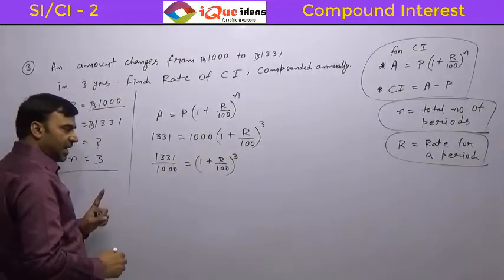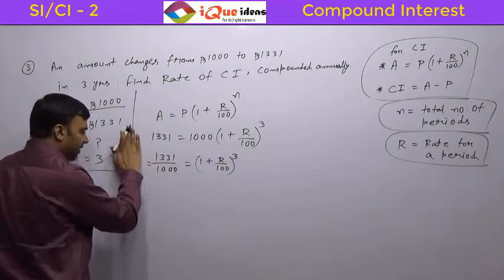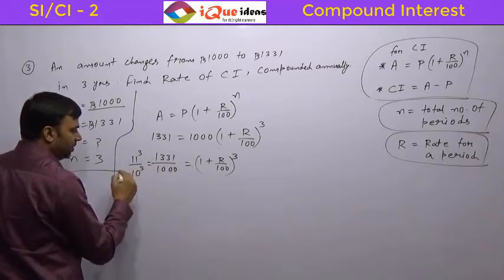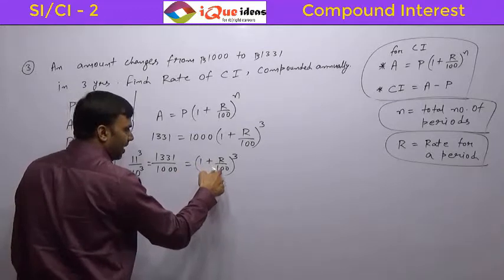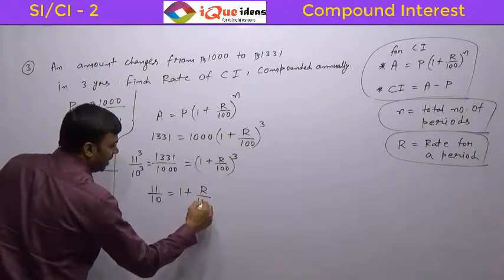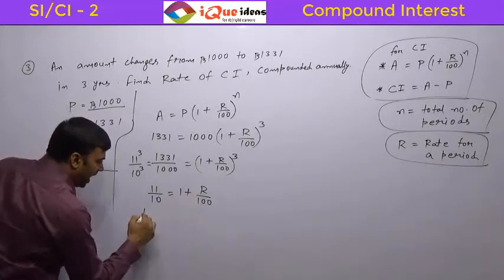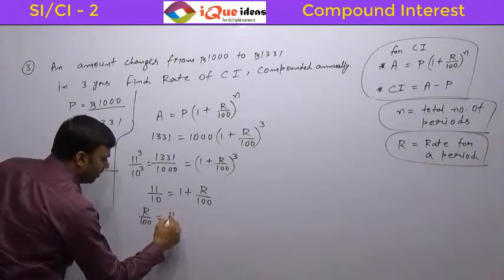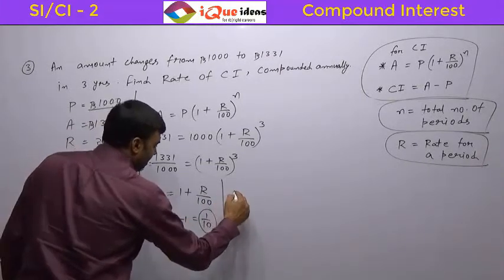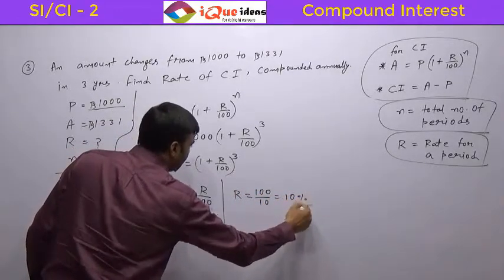Whenever such questions are asked, usually values given are known values. Now, in this case, if you look at it closely, 1331 is 11 cube, and 1000 is 10 cube. So 11 cube upon 10 cube is equal to 1 plus R by 100 whole cube. So whole cube goes away and we get 11 by 10 equal to 1 plus R by 100. So R by 100 is equal to 11 by 10 minus 1 that is 1 by 10. So R is equal to 100 by 10 that is 10 percent. So the answer to this question is 10 percent.